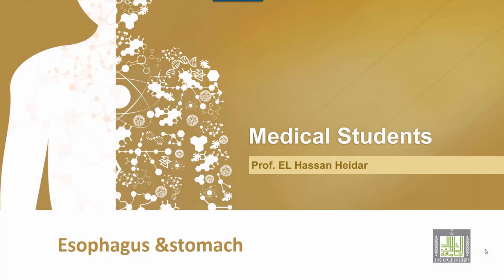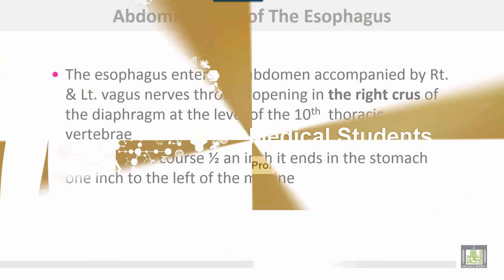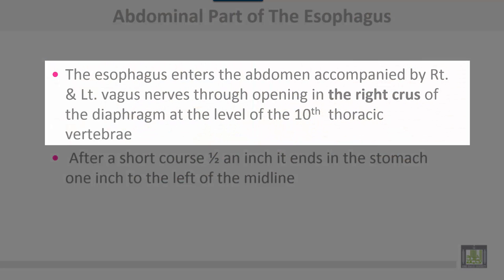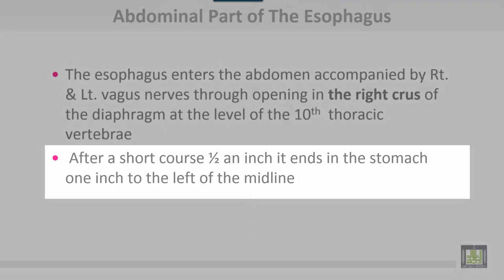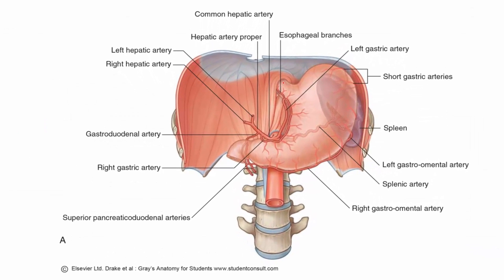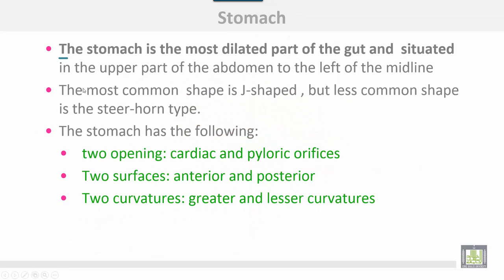The lower end of the esophagus, or abdominal part of the esophagus and stomach. The esophagus enters the abdomen accompanied by right and left vagus nerves through the opening in the right crus of the diaphragm at the level of the 10th thoracic vertebra. After a short course of about half an inch, it ends in the stomach, one inch to the left of the midline. The abdominal part of the esophagus enters through the right crus of the diaphragm, although it lies on the left side.